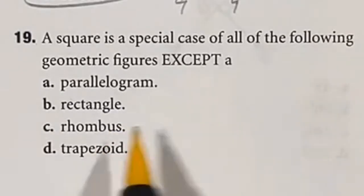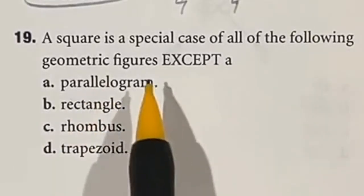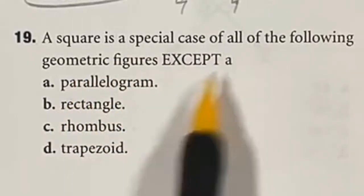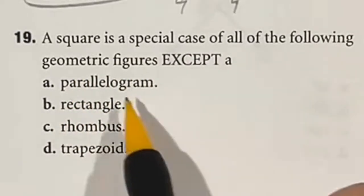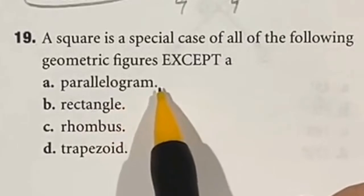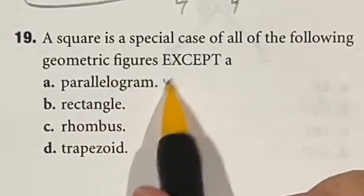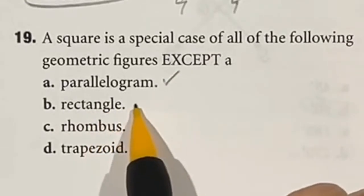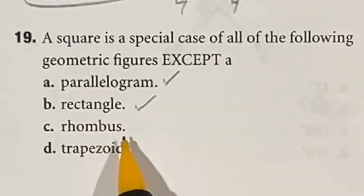Number 19 is just a definition question for these geometric figures. It wants to know: a square is a special case of all the following geometric figures except which one. Let's go through: a parallelogram means that both sets of opposite sides must be parallel, which they are in a square. A rectangle means that all corners are at 90 degree angles and it's four sided. We meet both of those.